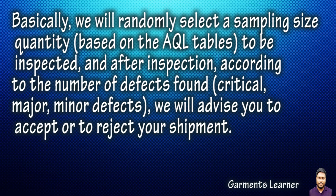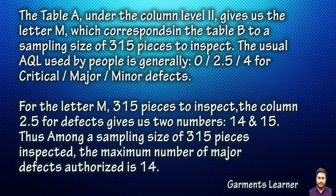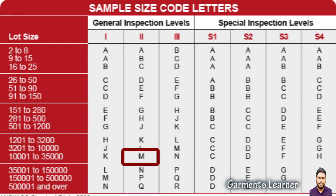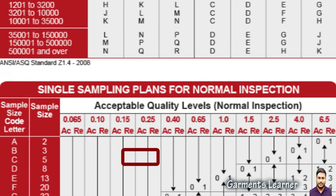After inspection, according to the number of defects found — major, minor, or critical — we will advise you to accept or reject your shipment. Table A, under column Level II, gives us the letter M, which corresponds in Table B to a sampling size of 315 pieces.